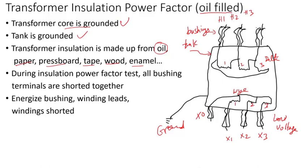During an insulation power factor test, all bushings' terminals are connected together — you put a wire or conductor shorting them. You do the same for the low voltage side. Typically the neutral bushing is grounded, so you have to remove that ground. So X0 is isolated from ground and the terminals are shorted together.